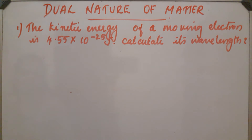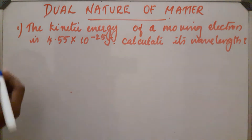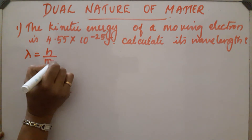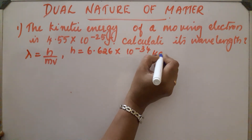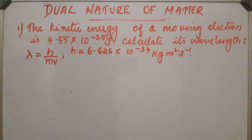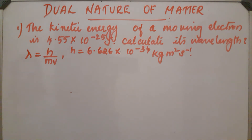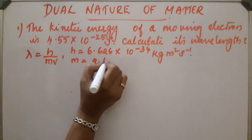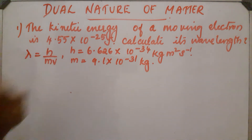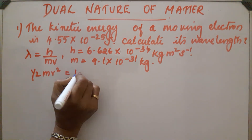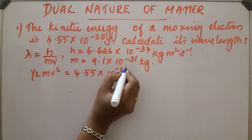Now let us do one problem based on this. The kinetic energy of a moving electron is 4.55 × 10⁻²⁵ joule. Calculate its wavelength. The equation is lambda = h/mv. h is Planck's constant = 6.626 × 10⁻³⁴ joule second, and mass of the electron m = 9.1 × 10⁻³¹ kg. Kinetic energy is (1/2)mv² = 4.55 × 10⁻²⁵ joule.